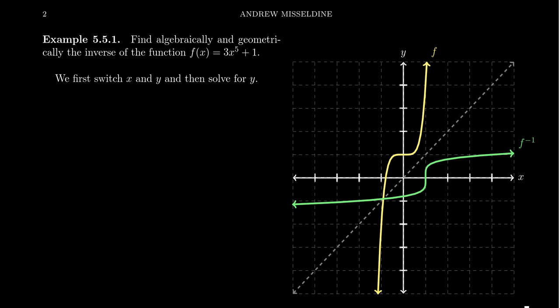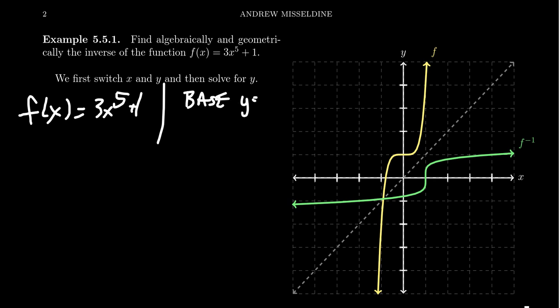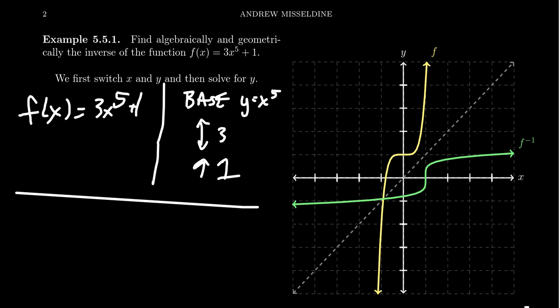To summarize: f of x equals 3x to the fifth plus one. We take as our basic graph y equals x to the fifth, then in terms of transformations, we stretch it vertically by a factor of three and shift it up by one unit. That's the basic graph of this function. We can also see visually that this graph is a one-to-one function — it passes the horizontal line test at all locations in its domain.